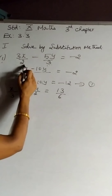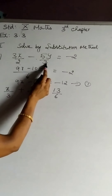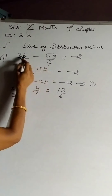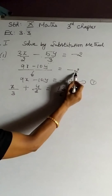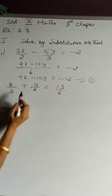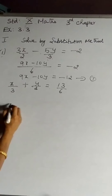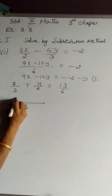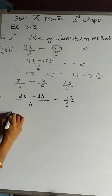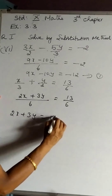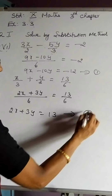The sixth sum: 3x/2 − 5y/3 = −2. Let us eliminate the fractions by finding the LCM of 2 and 3, which is 6. Multiplying through by 6 we get 9x − 10y = −12. The second equation given is x/3 + y/2 = 13/6. Finding LCM again, we get 2x + 3y = 13/6 × 6, and the 6 cancels, giving 2x + 3y = 13. This is our second equation.